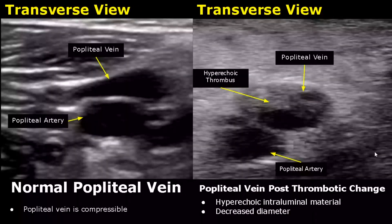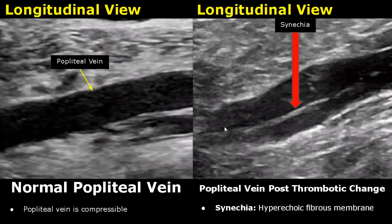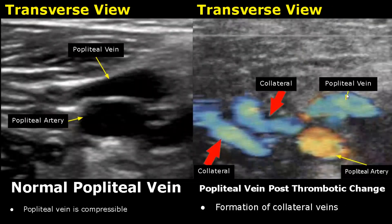In chronic cases of thrombosis, specific appearances are found. The thrombus will be hyperechoic and the vessel diameter will also be decreased. A synechia is a hyperechoic fibrous membrane that is found in chronic post-thrombotic change. In some cases, venous collaterals may form, and we can see that in this transverse view — collaterals are seen adjacent to the popliteal vein.